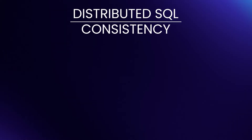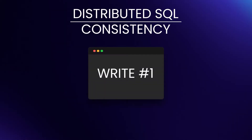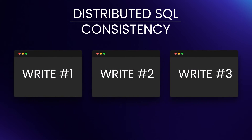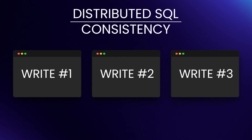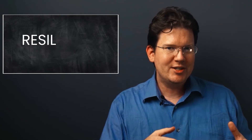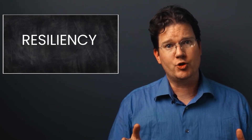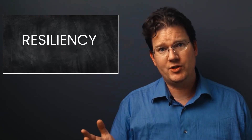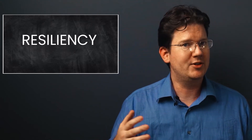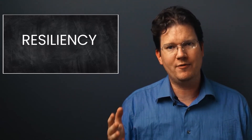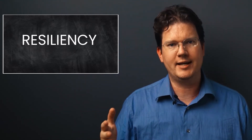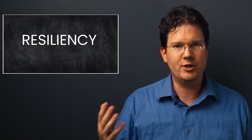Next up is consistency, and in this context we mean that readers always see writes, and they see them appear in the same order in which those writes occur. This is an area where NoSQL often runs into issues. Resiliency is another area where legacy SQL databases fall short. They've added some resiliency features over the years, but it's not smooth, and it often requires some level of extra architecting and/or human intervention.